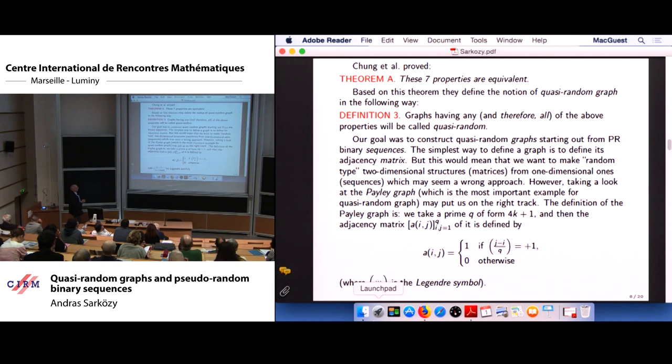These seven properties listed by them are all equivalent. And based on this theorem, they introduce the following definition. The notion of quasi-random graph is defined in the following way. Graphs having any, and therefore by this theorem, all of the above seven properties will be called quasi-random. So it means that if we want to show that a certain graph is quasi-random, it is enough to show that one of the seven properties holds for this graph.